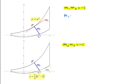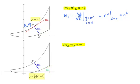m1 can be computed by finding dy/dx for the curve y equals e^x. The coordinates of P are (t, e^t), so x equals t. Differentiating e^x we get e^x, and substituting x equals t we get e^t. This is the gradient at point P, m1. To find m2, since the product m1 times m2 equals negative 1, m2 equals negative 1 over e^t.